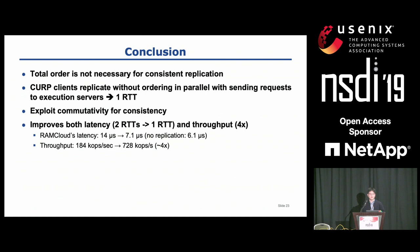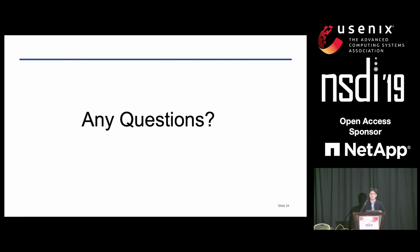Thank you for listening, and I will take questions now. [Audience]: Thank you for the good work. I'm just curious — because you use commutativity, does that mean it's not application agnostic? And if so, from an implementation perspective, do you have any way to annotate your request so you can know these properties?